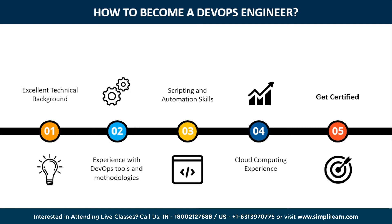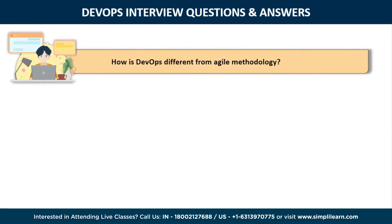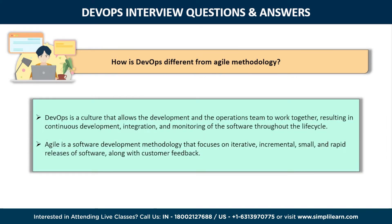Now let us begin with some really important DevOps interview questions and answers. The first question is: how is DevOps different from Agile methodology? DevOps is a culture that allows the development and the operations team to work together, resulting in continuous development, testing, integration, deployment, and monitoring of software throughout the lifecycle. Whereas Agile is a software development methodology that focuses on iterative, incremental, small, and rapid release of software, along with customer feedback. Basically, Agile addresses gaps and conflicts between the customer and developers, while DevOps addresses gaps and conflicts between the developers and IT operations.